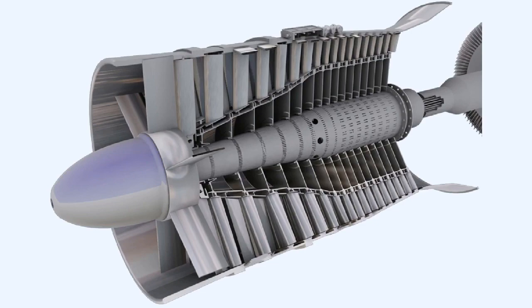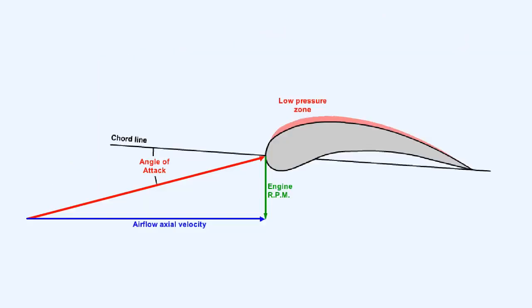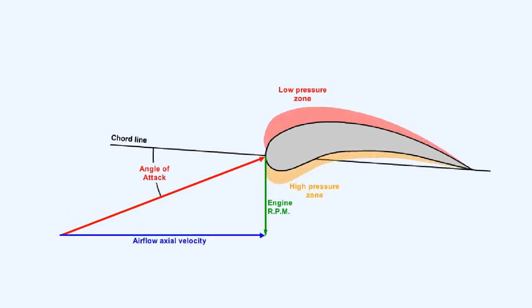In some engines at low compressor RPM, the relationship between RPM and airflow axial velocity may not be maintained to give the rotor blades the optimum angle of attack, unless some of the excess volume of air is allowed to escape from the intermediate stages of the compressor. If a compressor bleed valve is fitted to the compressor casing at a position adjacent to the intermediate stages, it can be opened at low RPM and during engine acceleration to allow some of the excess volume of air to escape. This will have the effect of bringing the axial velocity of the air in the earlier stages of the compressor closer to the optimum value, and also of reducing the choking effect in the rear of the compressor.